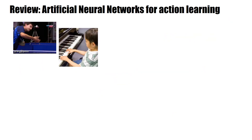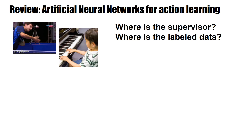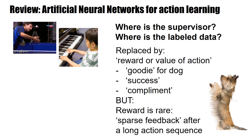Reinforcement learning is about learning without a supervisor, learning without labeled data. If you think of a human tennis player that learns a new serve, the only thing he has is the feedback — the visual feedback from where the ball lands. The little boy that learns the piano, the only feedback he has is how it sounds. Changes happen based on feedback in the brain, and overall learning in humans and animals is based on the reward or value of an action. The reward can be explicit such as a goodie for a dog, more indirect like a success feeling or a compliment, and reward is rare — it often comes only after a long action sequence.